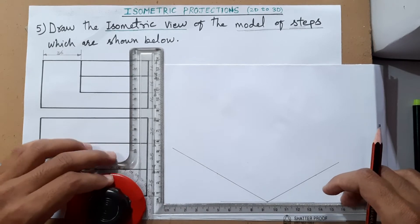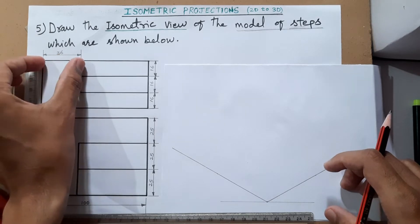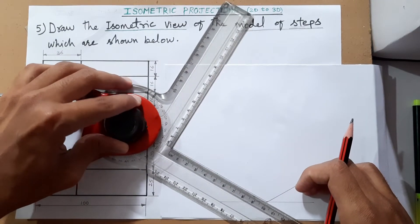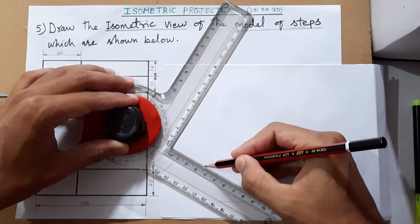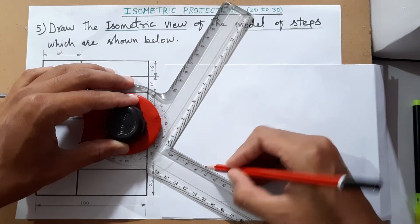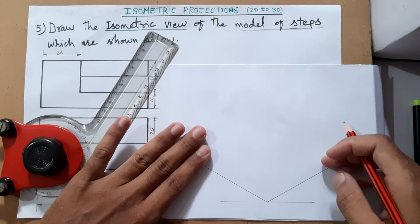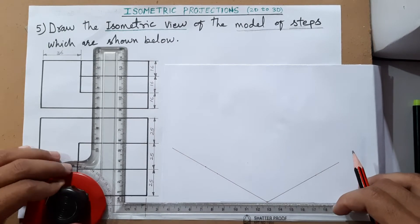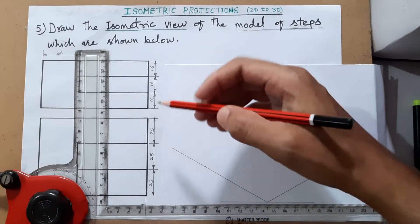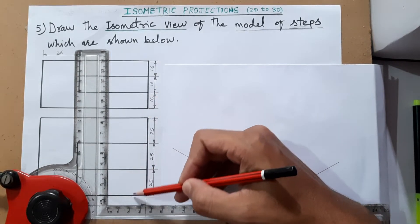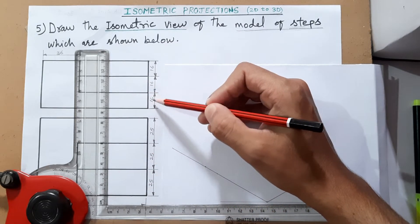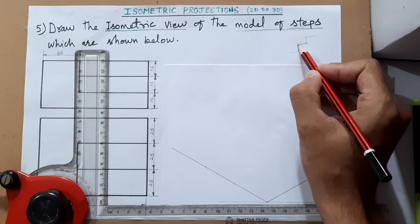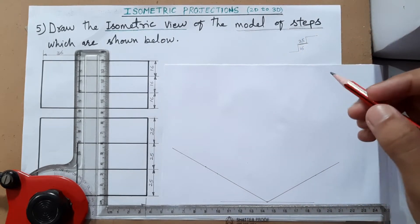Now we will draw the next side. The object has a certain height and a certain width — 36mm is the width. From here we will mark a point at a distance of 36mm. Step means it is like walking steps: where the horizontal surface will be, that is of 25mm, and the height of each step is 16mm. So height is 16mm and this width is 25mm — keep this imagination in mind.